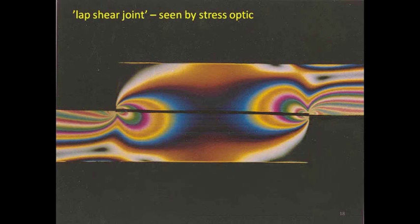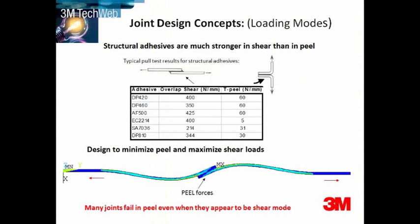This stress optic shows the stress concentration on a single lap shear joint — as you can see, all stresses are concentrated at the edges. So avoiding peel and avoiding cleavage is really good design for adhesive bonding. Structural adhesives in particular are much stronger in shear than peel. However, the DP620 showed that some adhesives can be quite good in peel because they absorb a lot of energy. But in general, it is good to design to minimize peel and maximize shear loads.